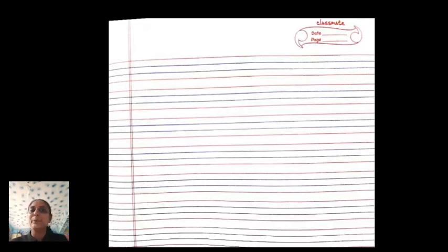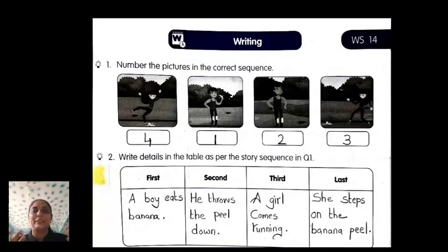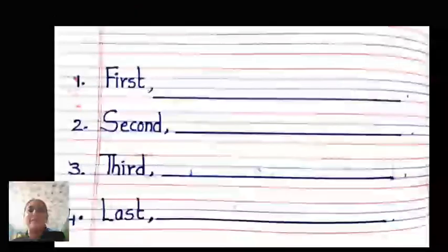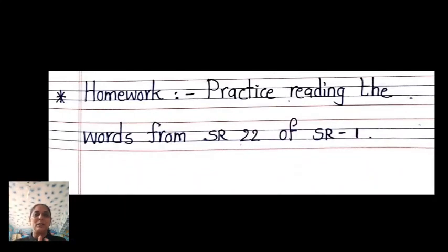After doing that, narrate this story in front of your parents. In the last class we ordered the pictures in correct sequence, then wrote sentence structures, corrected spelling mistakes, and added new words to make new sentences. Now write this on a fresh page as final fair work so you get written practice. Practice telling this story: 'A boy eats a banana — one boy was there eating a banana on the road, on the ground, on the park.' Narrate it in that way.